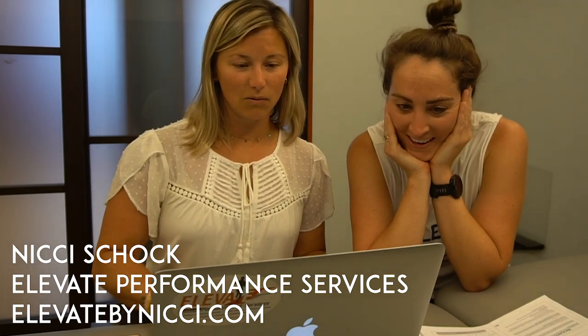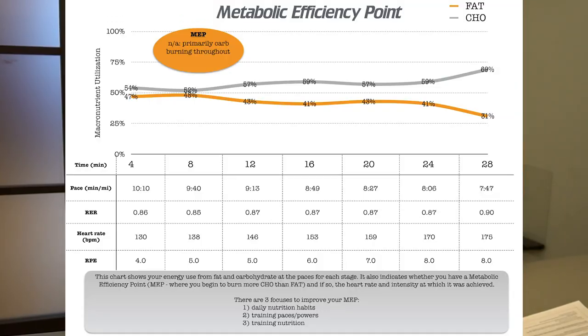So this first page, we're looking to see if you have a metabolic efficiency point. That's what we call it when you start out burning more fat than carbs, and then you have a place where you cross over into burning more carbs than fat. Looking at your chart, the gray line is the percentage of carbohydrates you're burning and the orange line is fat. You're starting out burning more carbs than fat, so that's why we don't have a metabolic efficiency point at this stage.